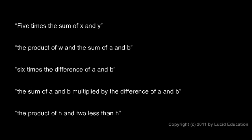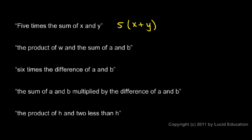Five times the sum of x and y. Think about what this means — five times this: the sum of x and y. We're going to think about the sum of x and y as a single thing, so we do that by putting it in parentheses. So we'll have five times (x plus y). That is the sum of x and y, and we have five times that.